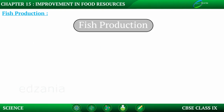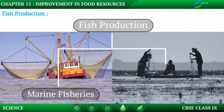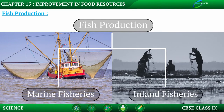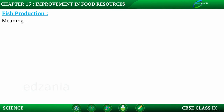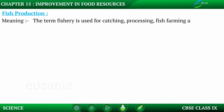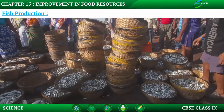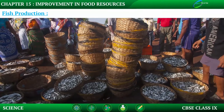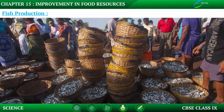Fish production is divided into two categories: marine fisheries and inland fisheries. The term fishery is used for catching, processing, fish farming and marketing of fish and other aquatic animals. Fisheries provides good job opportunity and self-employment to many people.